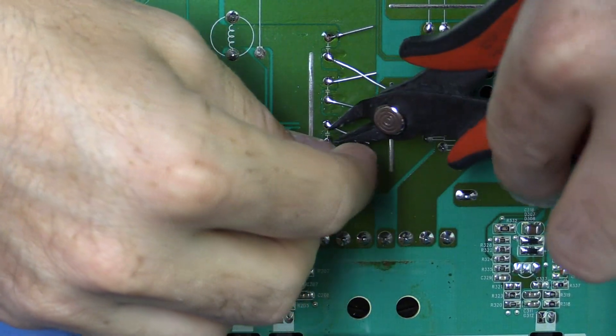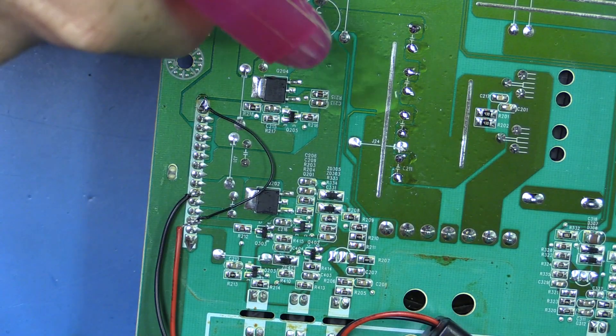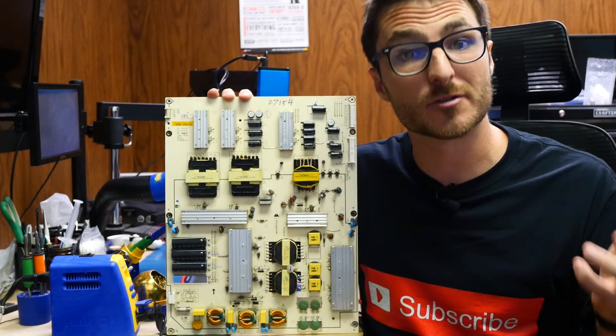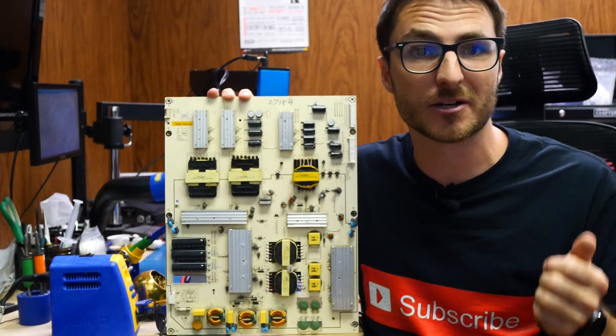We'll go ahead and cut off the excess leads and give it a quick clean with some isopropyl alcohol and our toothbrush. I finished the replacement of the other seven capacitors off-screen, so that completes our repair.